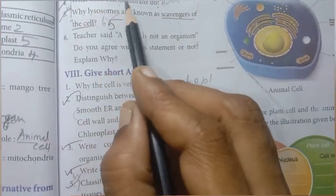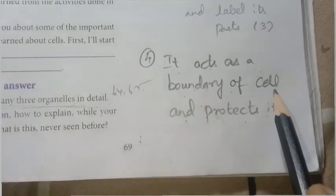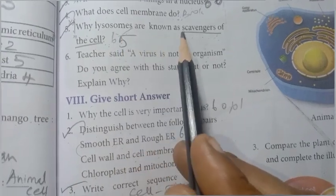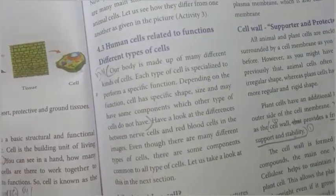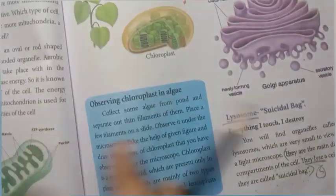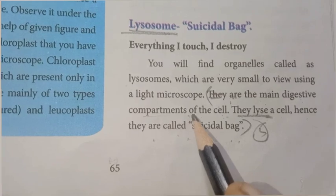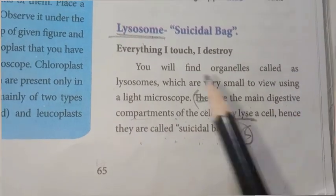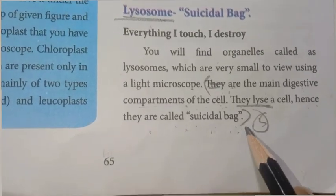What does the cell membrane do? It acts as a boundary of the cell and protects it. Why are lysosomes scavengers of the cell? Page number 65. Lysosomes are the main digestive compartment of the cell. They lyse a cell, hence they are called suicidal bags.